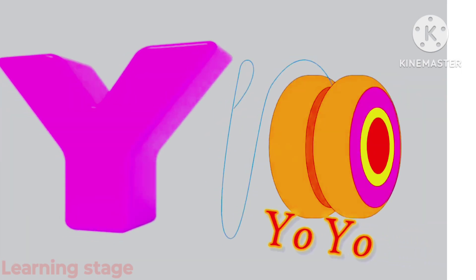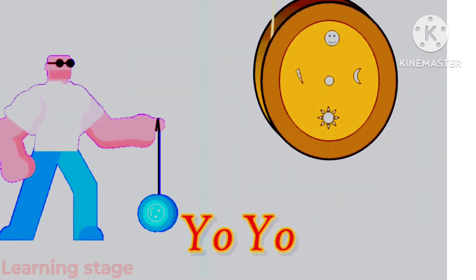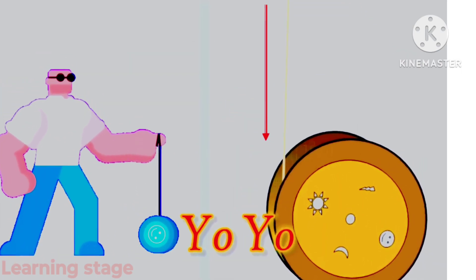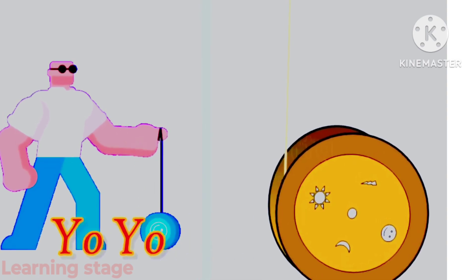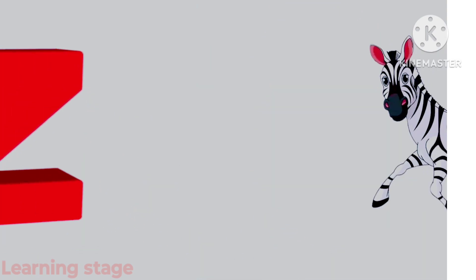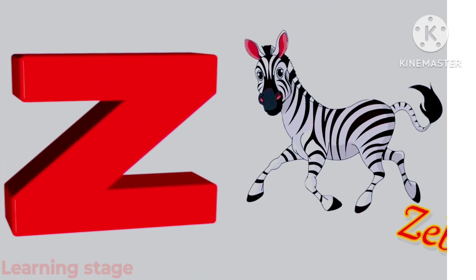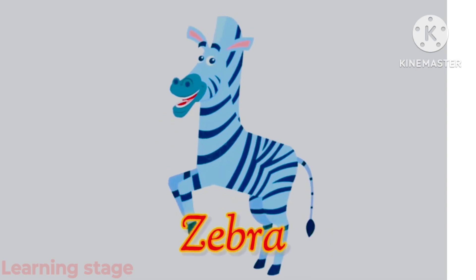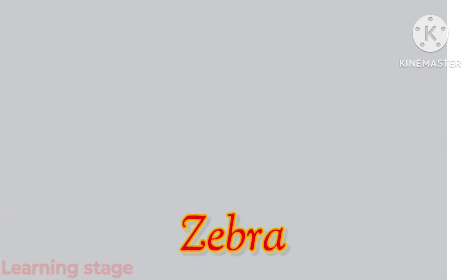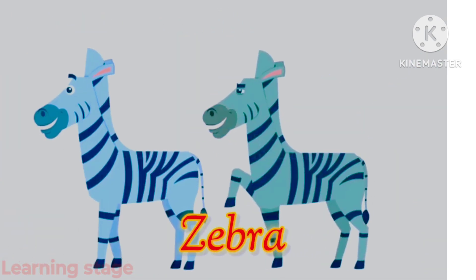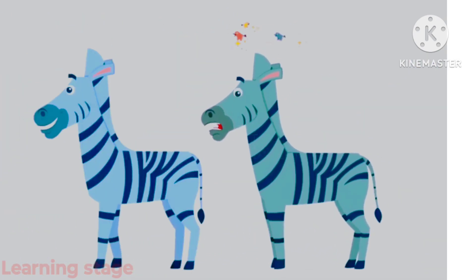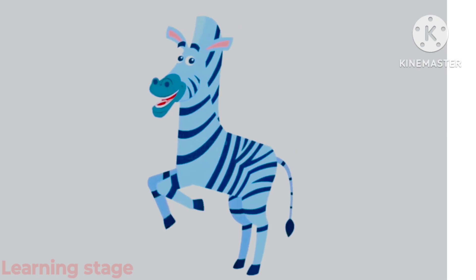Y is for yoyo, yoyo. Z is for zebra, zebra. I hope you like this video — please like, comment, share, and subscribe.